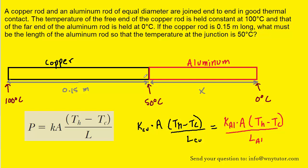Now, the cross-sectional area of the copper rod is the same as the cross-sectional area of the aluminum rod. How do we know that? Well, it's because they have equal diameters. So we can actually cross the area term out of this equation.